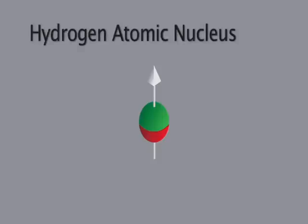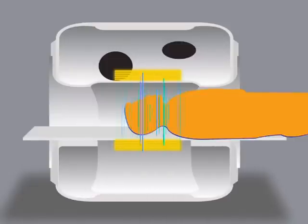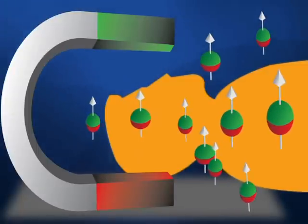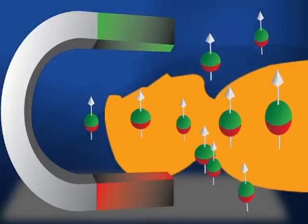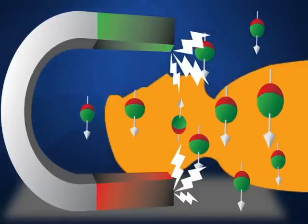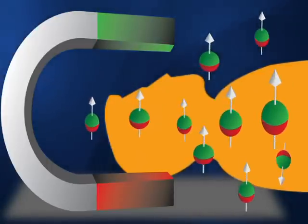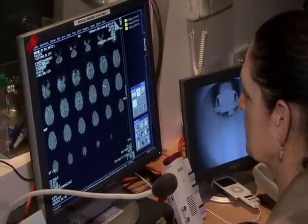MR imaging is based on the most prevalent atomic nucleus in the human body — the hydrogen atomic nucleus, which is found in tissue and blood. MRI uses powerful electromagnetic fields to affect the hydrogen atomic nuclei. The MRI machine generates a powerful static magnetic field, causing hydrogen atomic nuclei to align with it. A momentary burst of energy from a radio frequency coil positioned around the head excites the hydrogen nuclei. When this energy pulse is turned off, the nuclei return to their resting state and release the stored energy, which is detected by the scanner and becomes the source of our data.